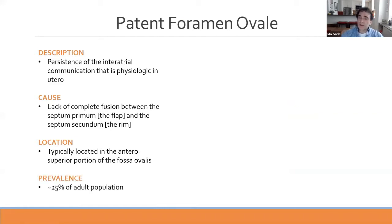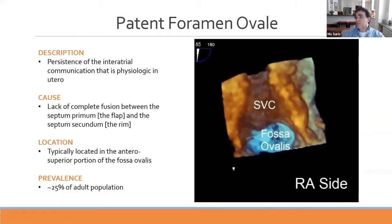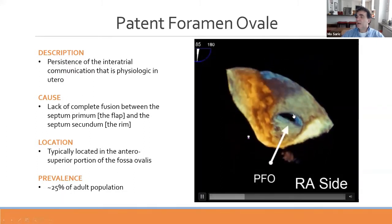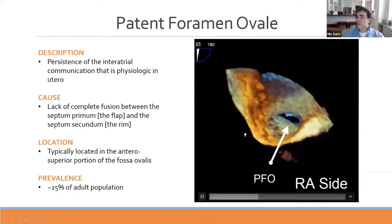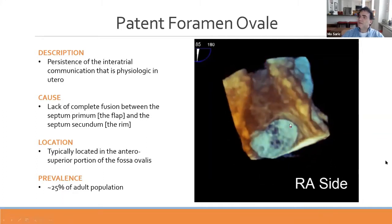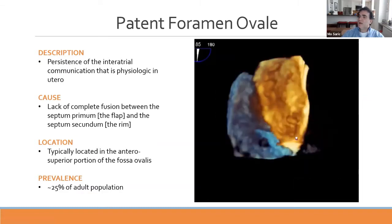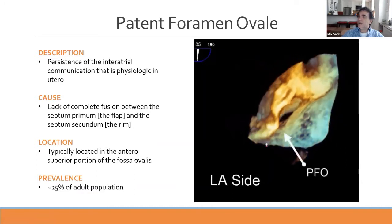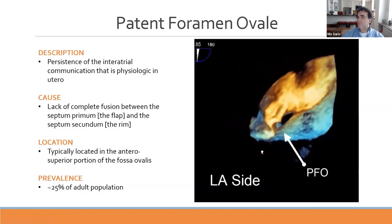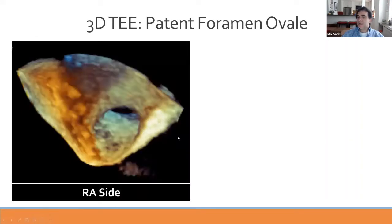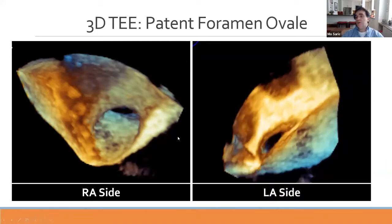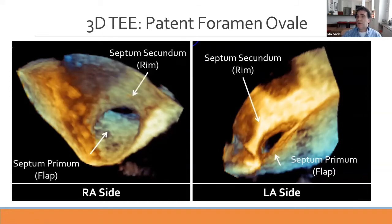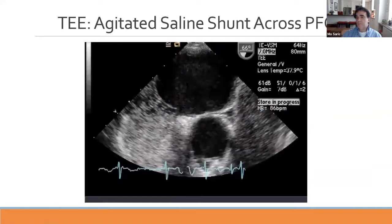This 3D moving image shows the patent foramen ovale in the supero-anterior portion from the right atrial side, and turning it around reveals the PFO from the left side—between the rim and the flap. In still images you can recognize it from both the right atrial side and the left atrial side: septum primum flap and septum secundum rim. On TEE, you can also observe the shunt directly through the PFO.